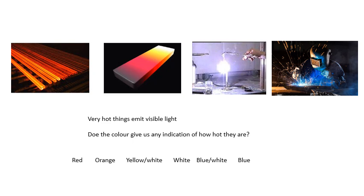Think about this: very hot things emit visible light. Does the color give us any indication of how hot they are? Look at the photographs above. You can imagine it's starting to glow red, then orange, yellow, white, white hot, and then beyond white hot a bit of blue coming in. These colors will give us an indication of the temperature.